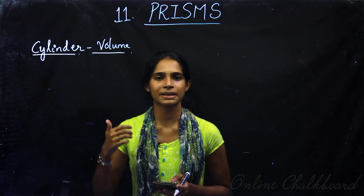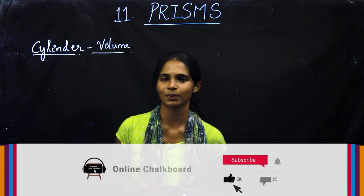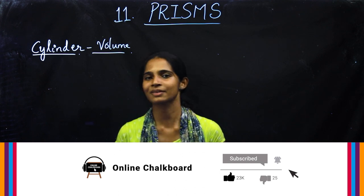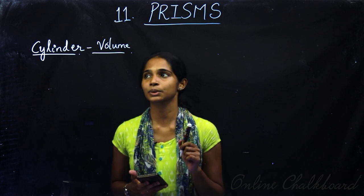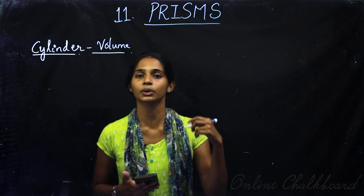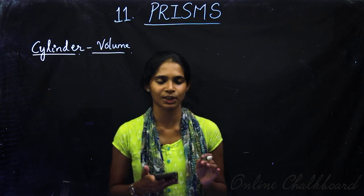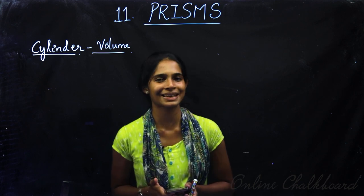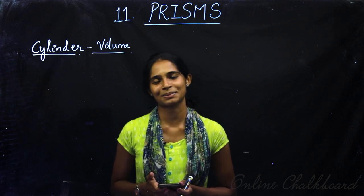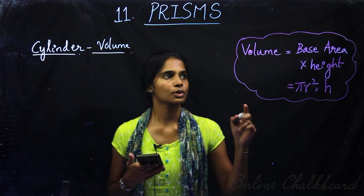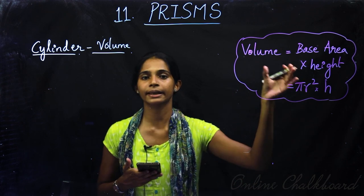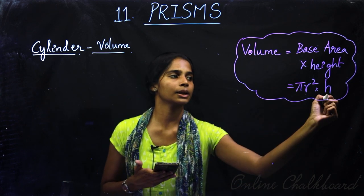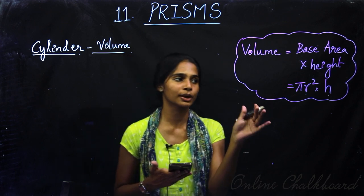In the previous classes, we started the cylinder. If you have any previous videos, you will have a link in the description box — please watch the previous videos. We already have exercise questions from the previous classes. The volume of a cylinder is the base area into the height. For a circular cylinder with radius r, the volume is equal to pi r squared h.